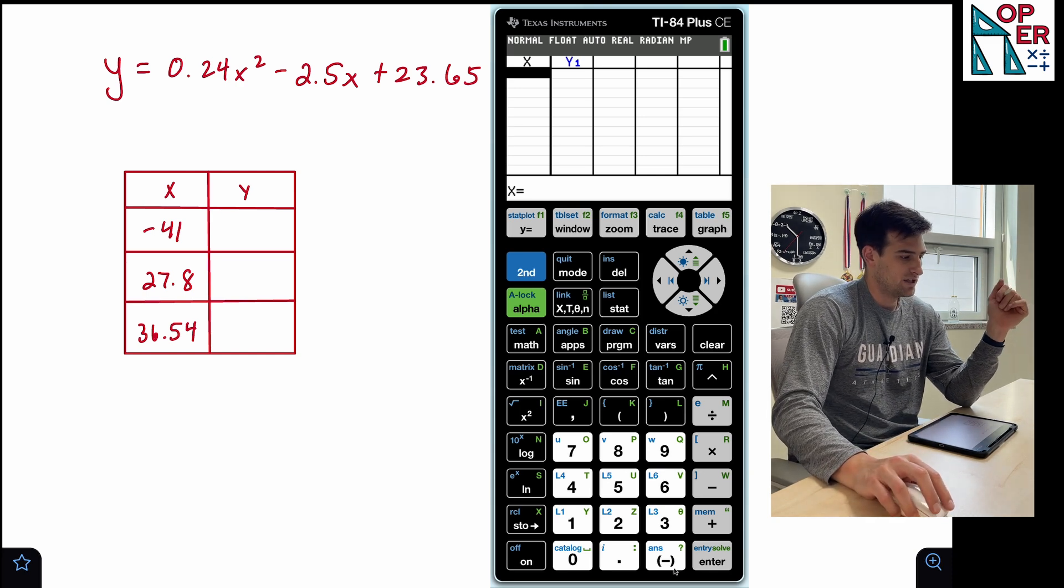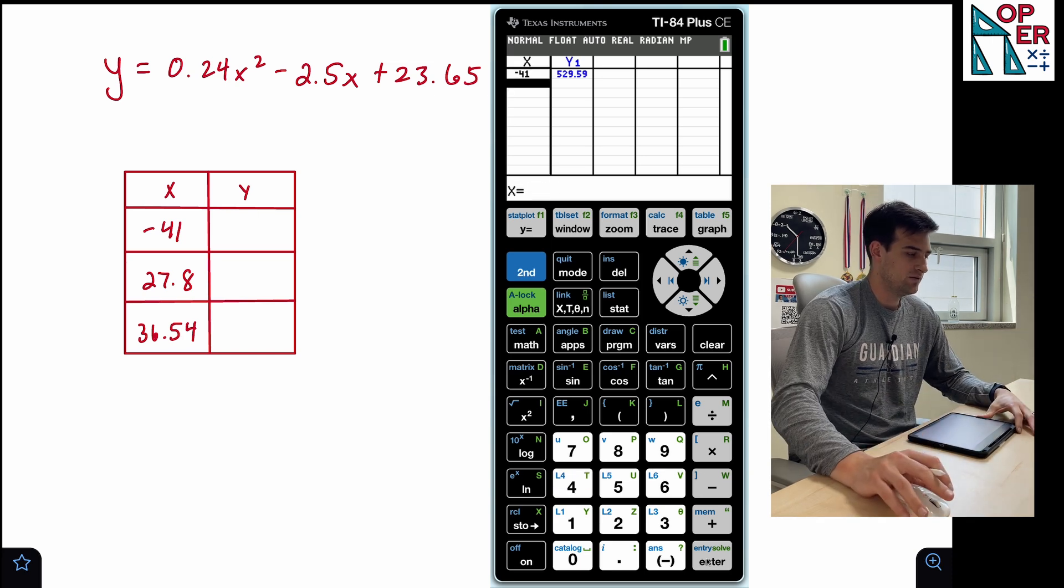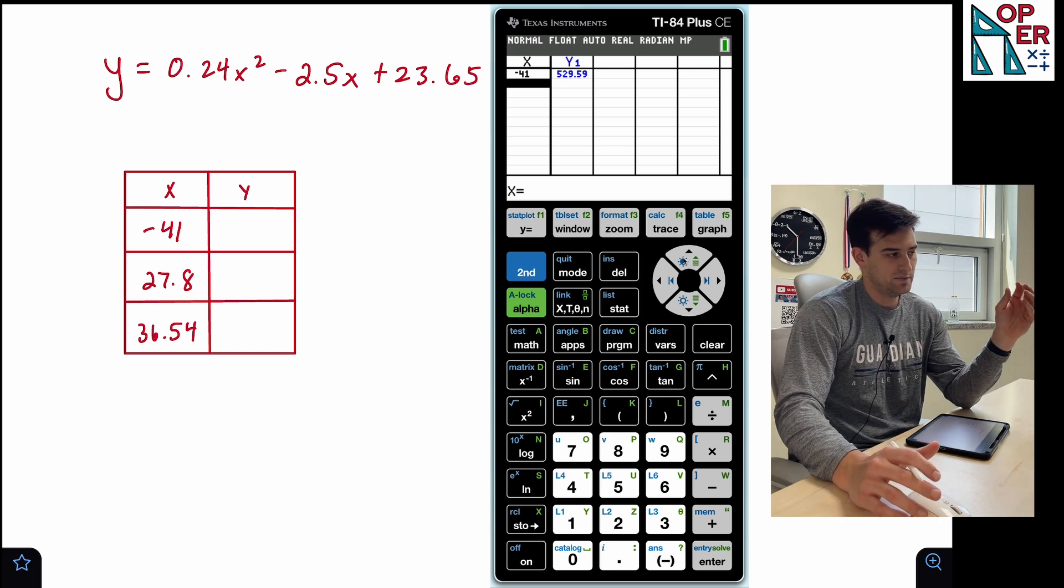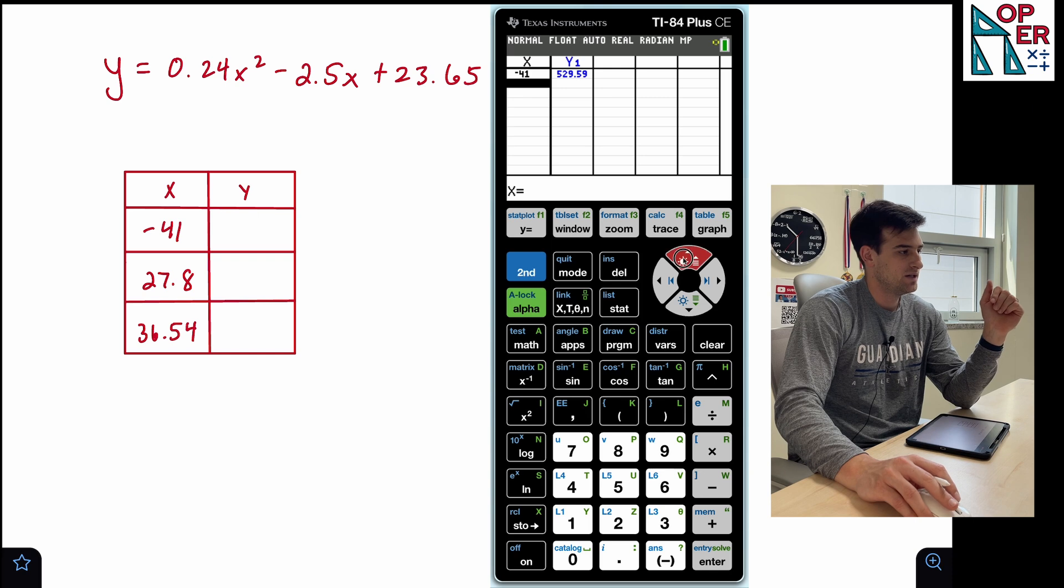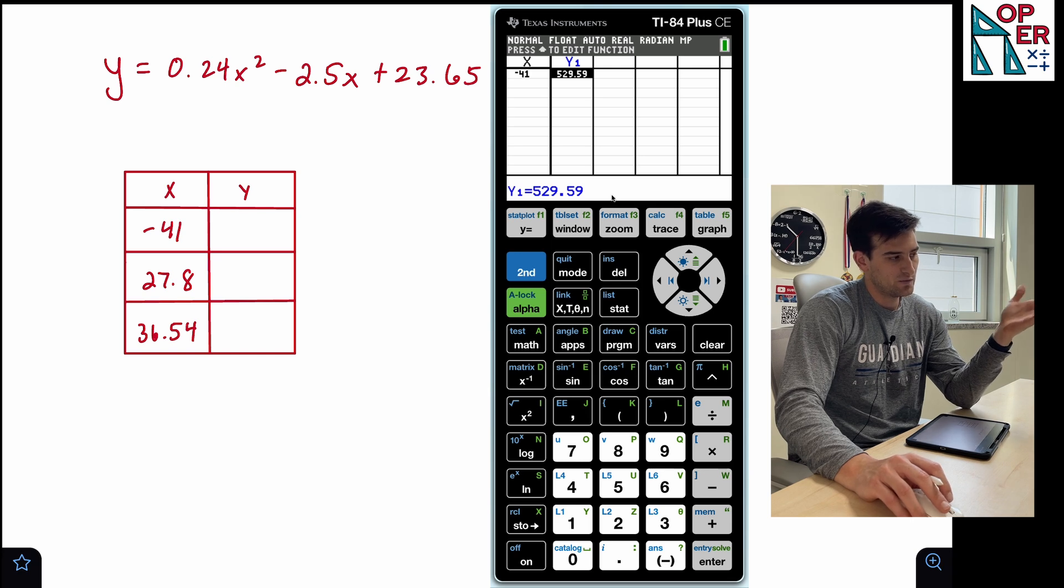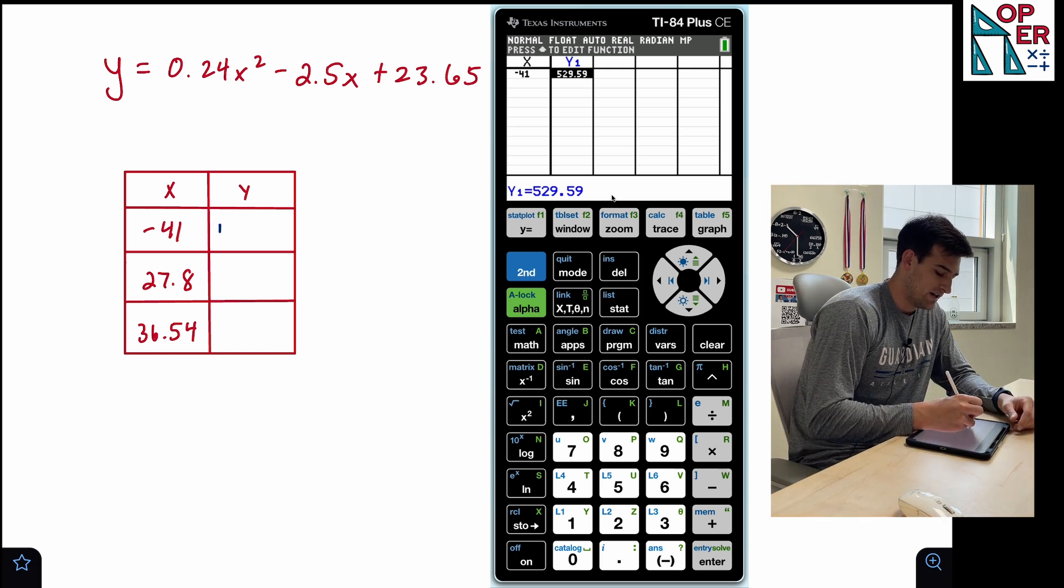So the first one we're gonna do is negative 41. So we type in negative 41, we hit enter and it gives us that value. Now, one thing we could do if we want to round our value to a different decimal place, here it's to the hundredth place. So I could go up and over to that value and it's gonna tell me the exact value down here. The exact value is what we see on the screen. So we would just write 529.59.